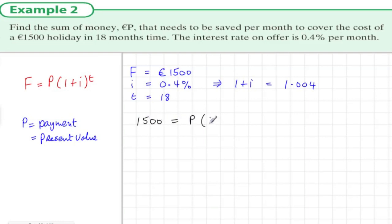So the total is €1500. The first P invested has been there for 18 terms of interest, the next P invested was there for 17 terms of interest, and this goes right down to the last P that was invested for one term of interest.